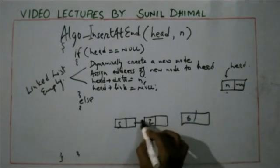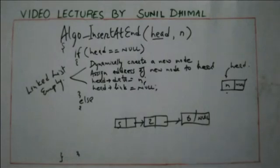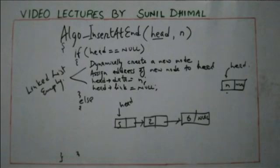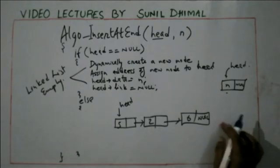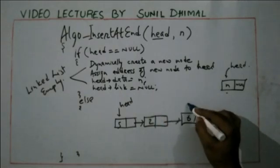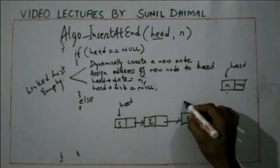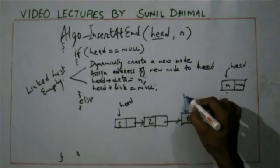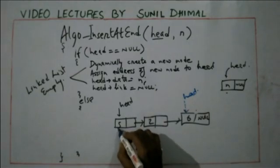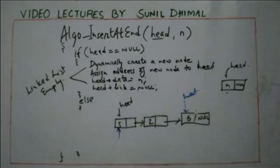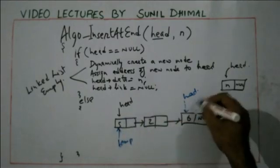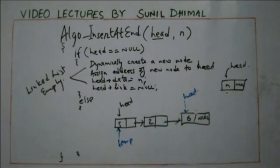Now how do you insert the element at the end? We need to advance through the list until we reach the last node. Moving head directly is not a good idea, so we create a new pointer called temp pointing to the first node. Then we advance temp to make it point to the last node of the current list.